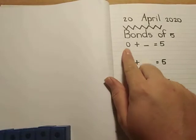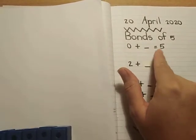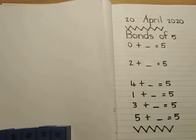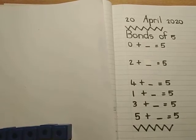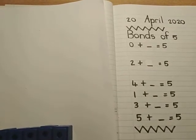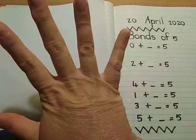So we're going to start over here. Our first sum says zero plus what gives me five. So to do this you're going to need some blocks. You can use lego or you can use pasta or your crayons or even your fingers.